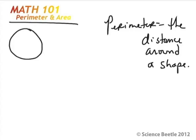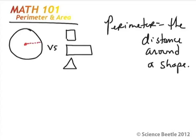Our last figure is going to be the circle. If you look at the circle, the one thing we really can't measure in terms of a side is that the circle does not have any unique sides like the triangle, rectangle, or square. What we do know is that we can find the middle point of the circle. The center point of a circle — if you measure the distance from the center point all the way to the edge, this area is called the radius, usually denoted as r. The radius is the distance from the center of the circle to the outer edge of that circle.